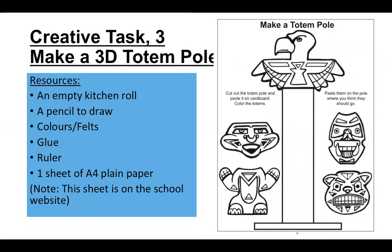Creative task three — make a 3D totem pole. What you will need to do is have some drawings like the ones shown here. You can draw these on a piece of paper and then you are going to stick them onto a toilet roll — although it's probably best to use a kitchen roll rather than a toilet roll. Obviously use an empty one with no tissue on it. Then you're going to stick these creatures onto the totem pole to make a 3D totem pole.